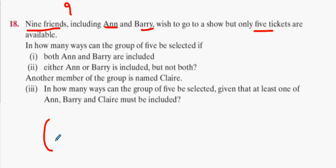Ann and Barry have to go. That means you've already chosen two of your tickets. That means you've also chosen two of the friends, which leaves seven friends for three positions. Seven C3, 35. If Ann and Barry are both included.